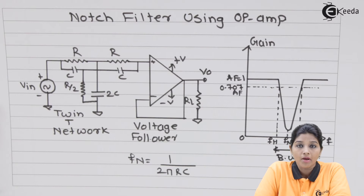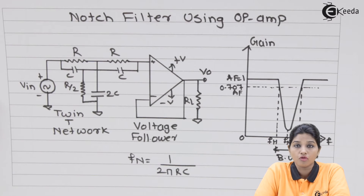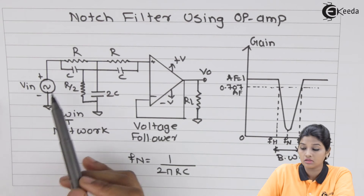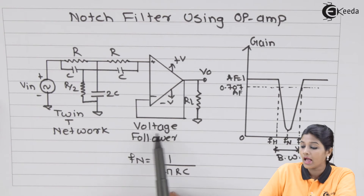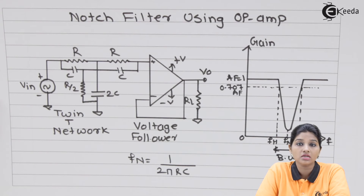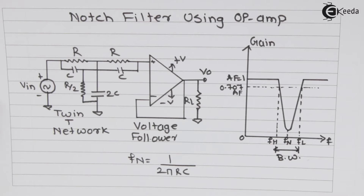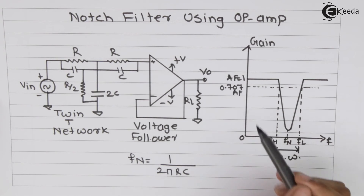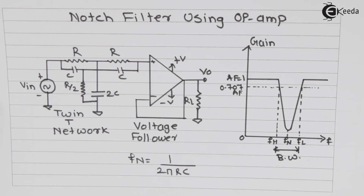When using an op-amp, it is required to be used in voltage follower configuration. The twin T network along with the input signal is applied to the non-inverting terminal of the op-amp. Because of this, the value of Q is increased and bandwidth is reduced. Looking at the frequency response — the graph between frequency on the x-axis and gain on the y-axis — the frequency response becomes more sharp, meaning the band rejected by the filter is narrower compared to wide band reject filter.